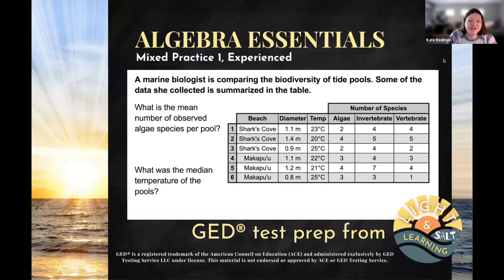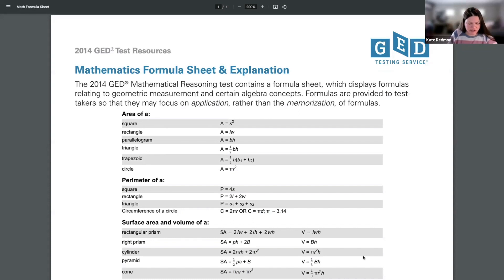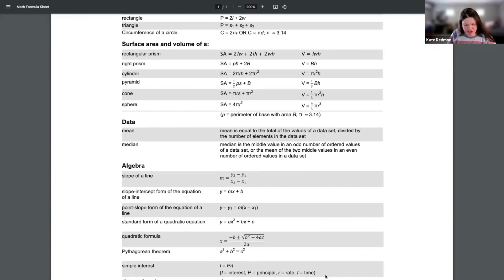So first question we see about this table is what is the mean number of observed algae species per pool. So mean, also known as an arithmetic average, or just an average, the only kind of average you're going to see on the GED. But mean is a data analysis concept. But as it turns out, it's on the formula sheet. When you look at the GED formula sheet, the first maybe half of it is geometry. But right below that in the middle is a data section.